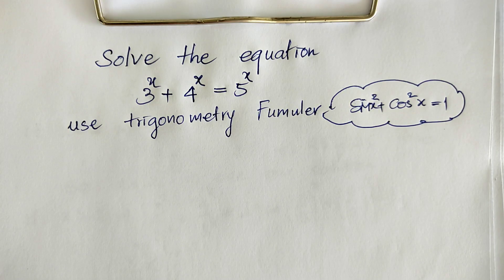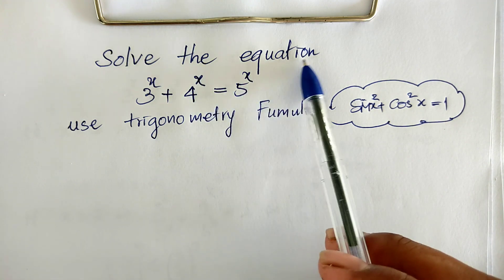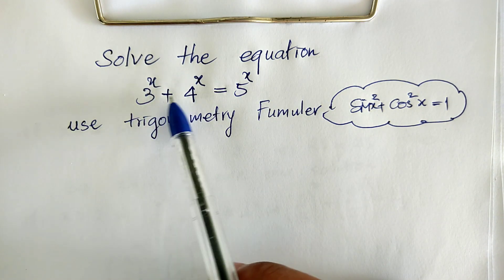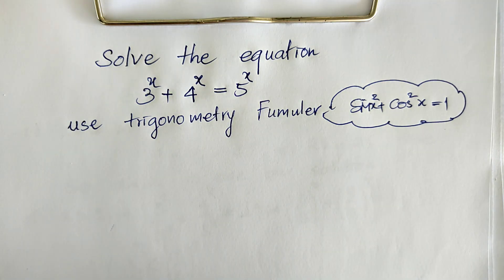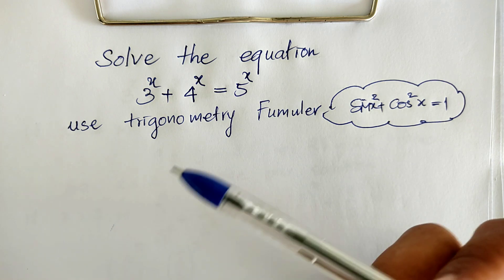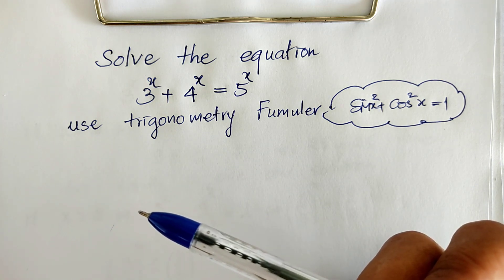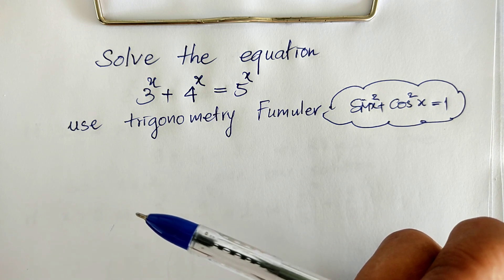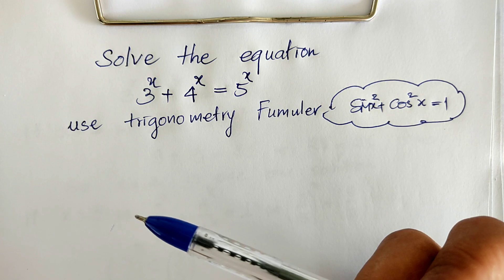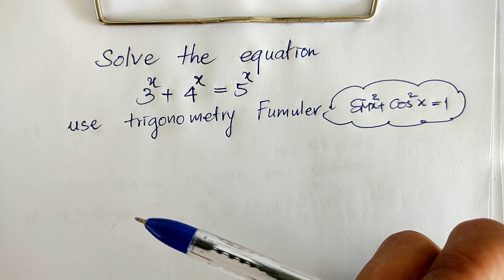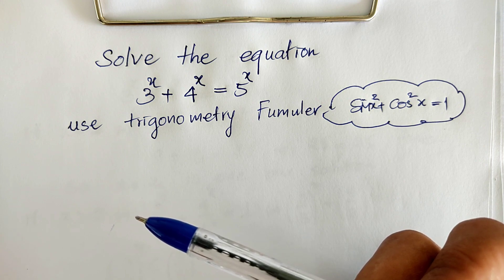Hello everyone, welcome to my YouTube channel. Today I have: what is the sign — like on paper — solving the equation 3 power h plus 4 power h equal 5 power h? Do you know how to solve this? If you know, try to solve it. When you do it already, please come back to watch my video from beginning to end to verify your solution. And before we go to the solution, please don't forget to subscribe to my channel for more exciting videos. Okay, now let's go to the solution together.